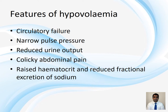An earlier feature before frank shock is a narrow pulse pressure. Because of hypovolemia, there is peripheral vasoconstriction, which causes a slight increase in systolic blood pressure but a significant increase in diastolic blood pressure — determined by peripheral resistance. For example, a patient normally at 100/70 may present with 120/100 or higher. Do not treat the hypertension if the pulse pressure is narrow in nephrotics. There will obviously also be a reduced urine output — any nephrotic with reduced urine output needs prompt action.